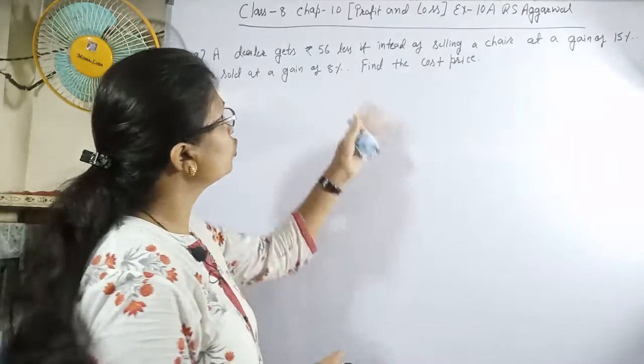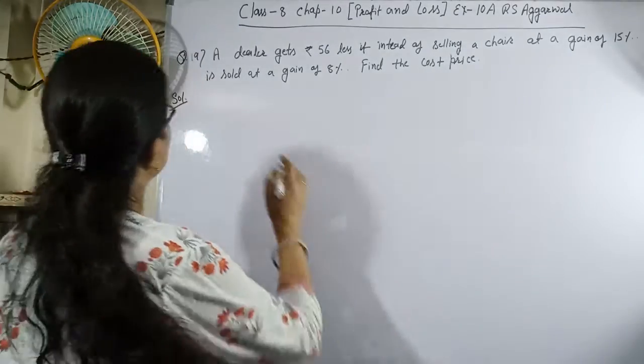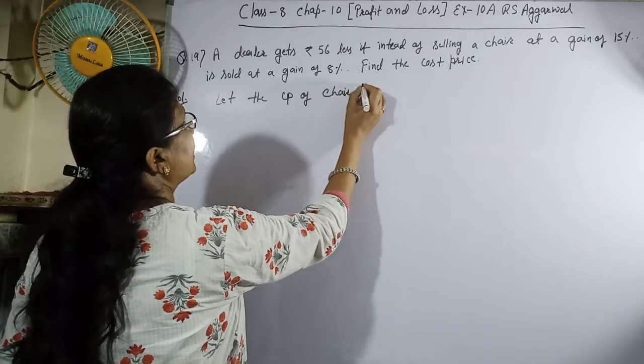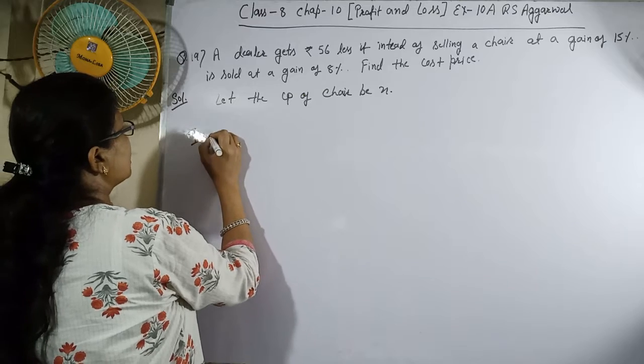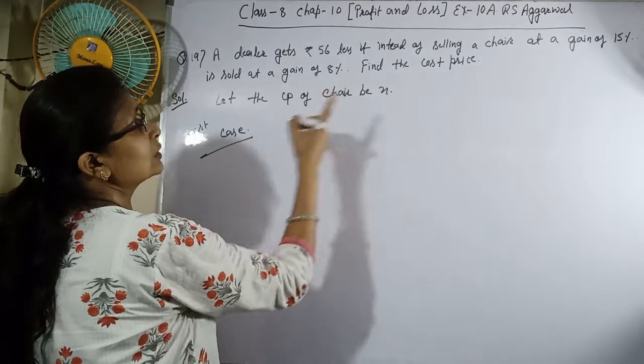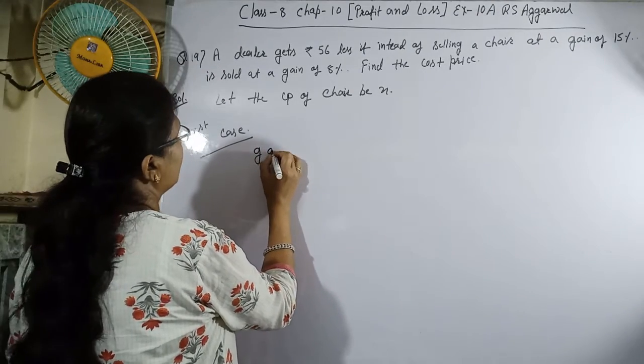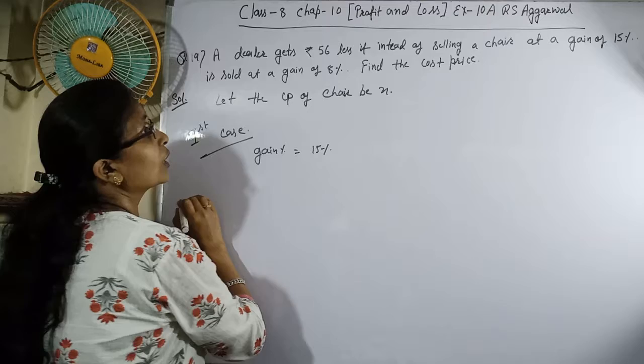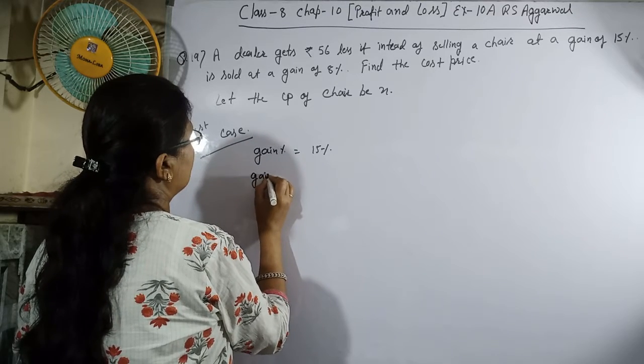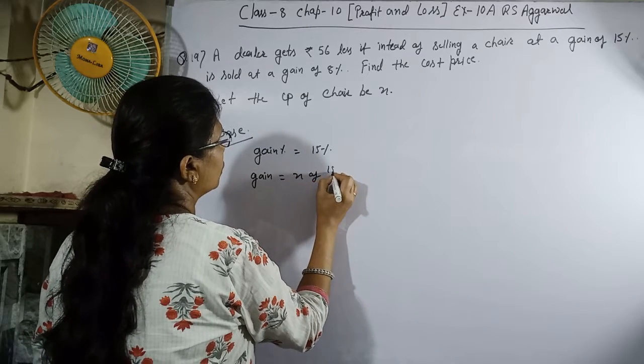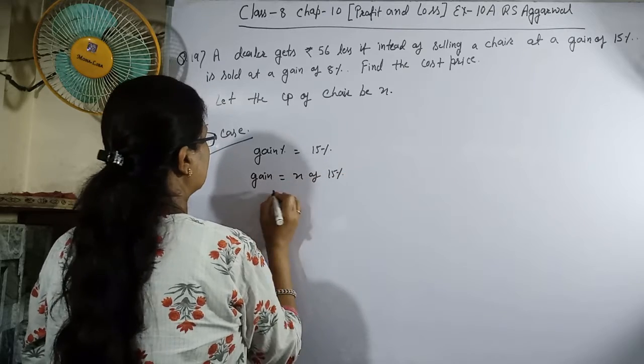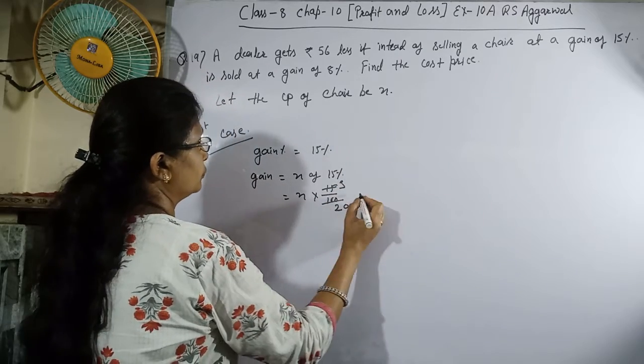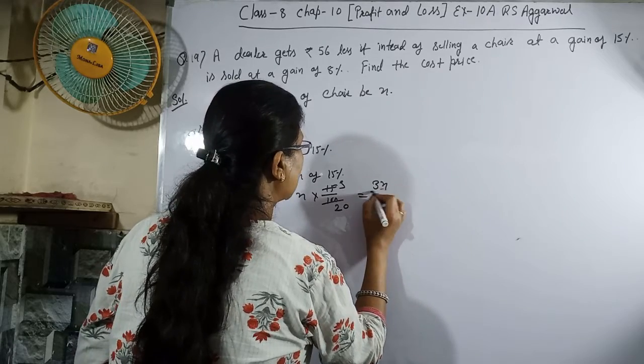Let the CP of chair be x. First case which is 15%. Therefore, gain equals x of 15%, which is x multiplied by 15 upon 100, equals 3 upon 20, which is 3x upon 20.